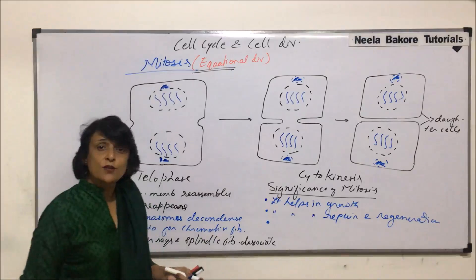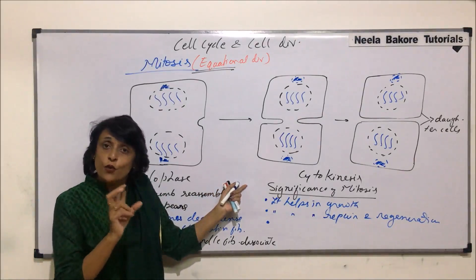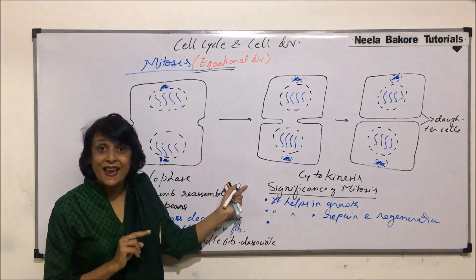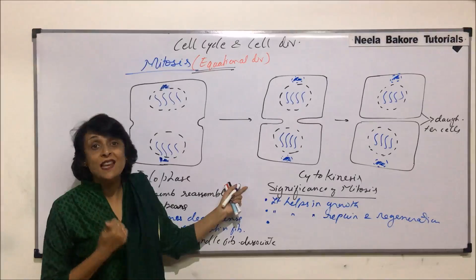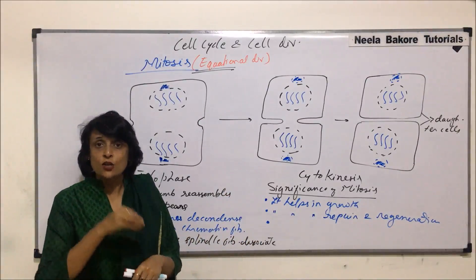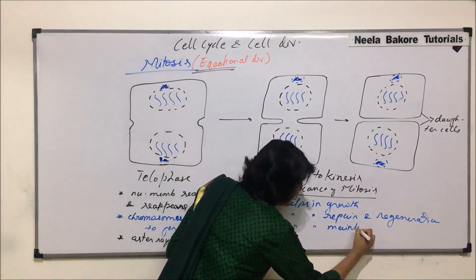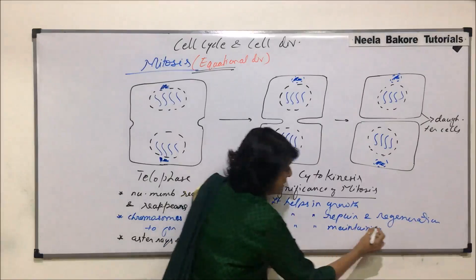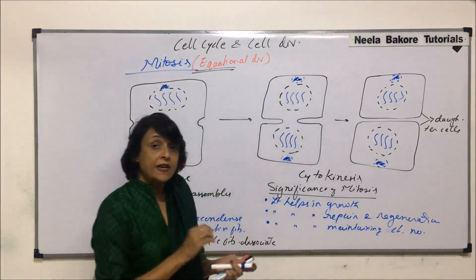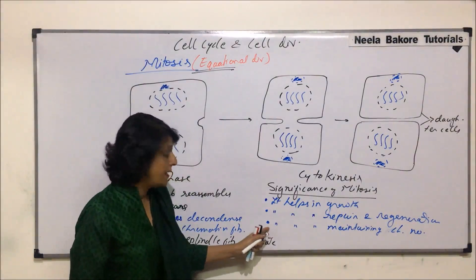Another significance of mitosis: all the cells formed by this division are identical in terms of chromosome number. Every species has a fixed number of chromosomes per cell — in humans, all body cells have 46 chromosomes, that is 23 pairs. Mitosis helps in maintaining the diploid number, or whatever chromosome number the cell has, because if it takes place in a haploid cell, that haploid number is maintained.